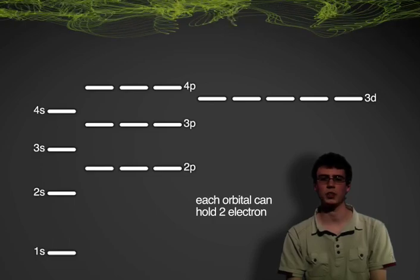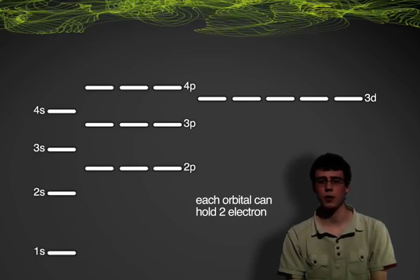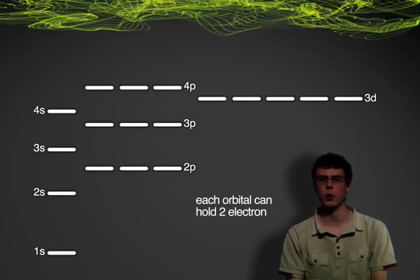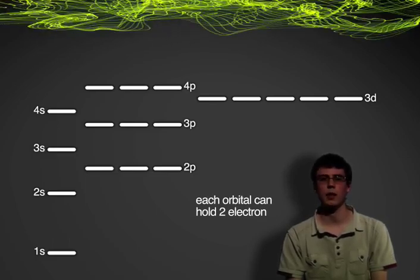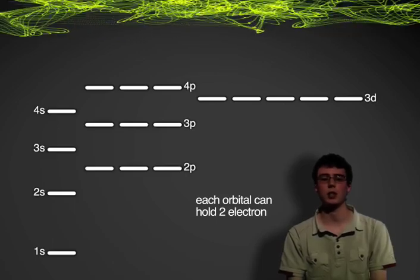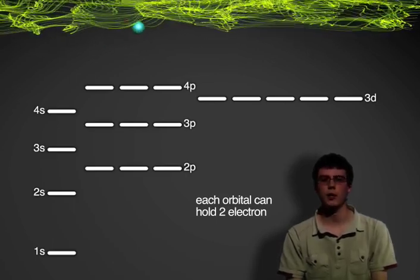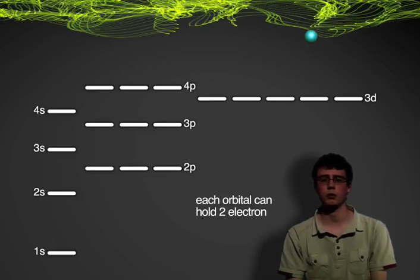All elements want to be stable, and to do this they must house their electrons in such a way that their overall energy is as low as possible. Therefore, the electrons occupy the lowest energy level available. This is known as the ground state electronic configuration.